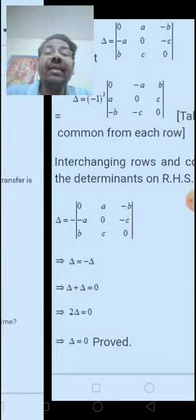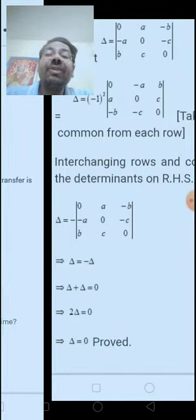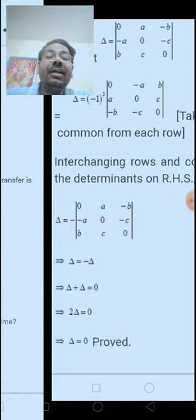Every row you will find minus 1 to the whole cube that will give you first row 0, A, minus B. Sign of the first row, first column and first row; second row and third row will be changed.